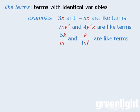We can also say that 5k/m⁸ and k/4m⁸ are like terms because the variable portion in each term is k/m⁸.